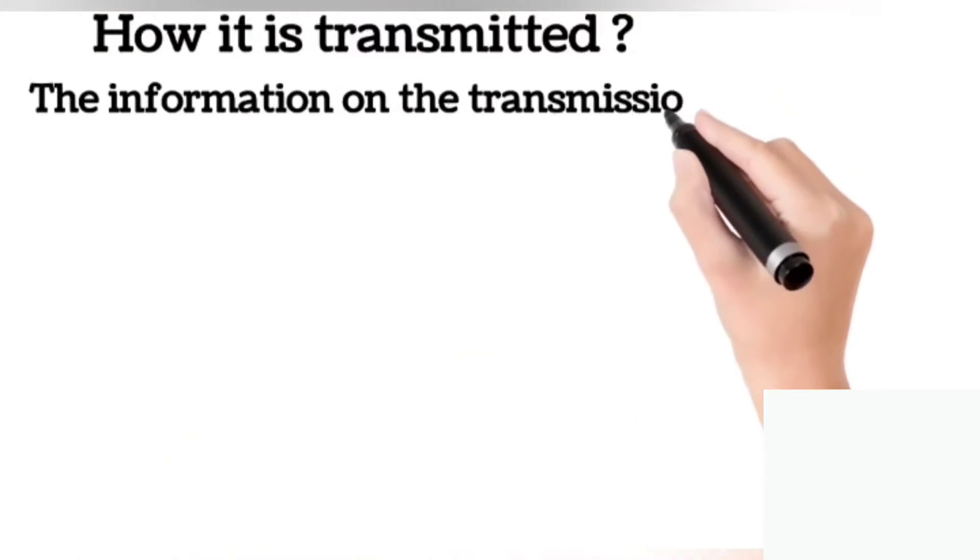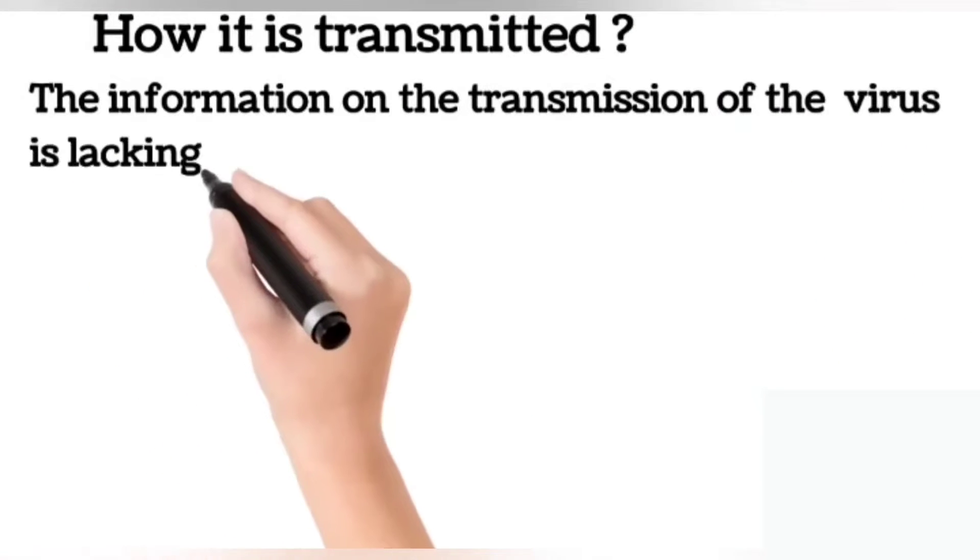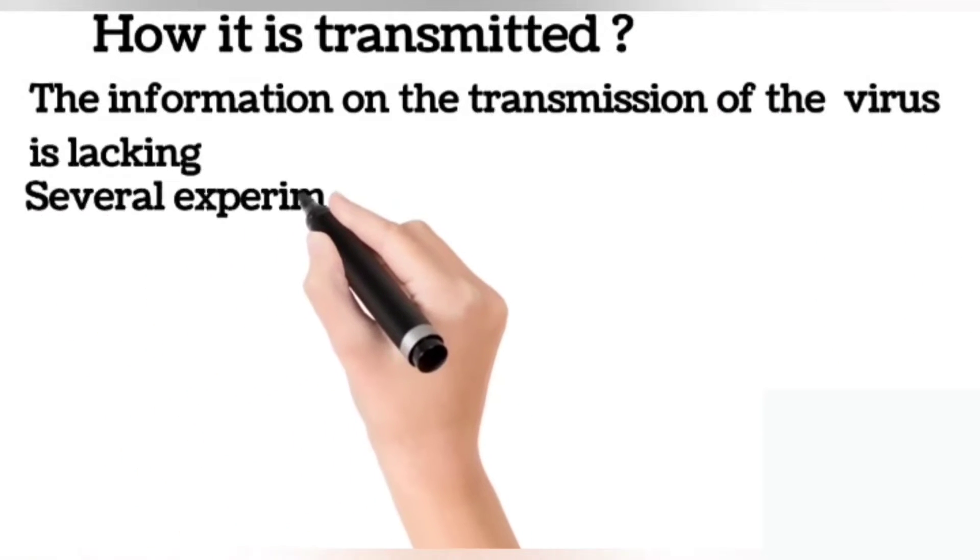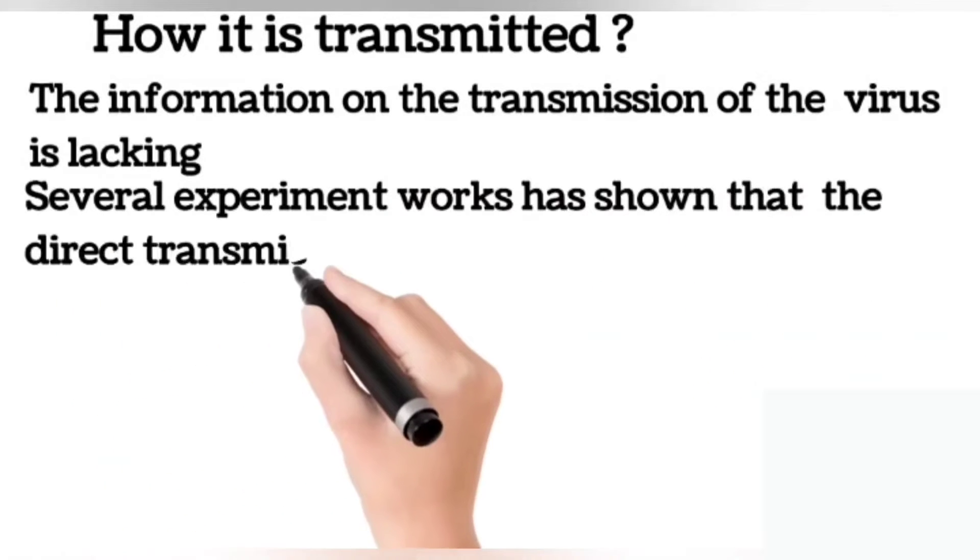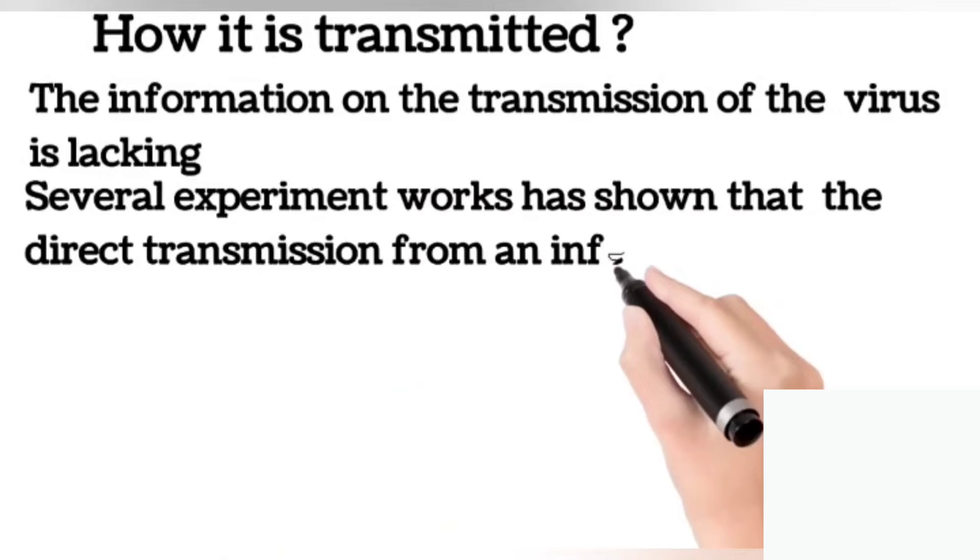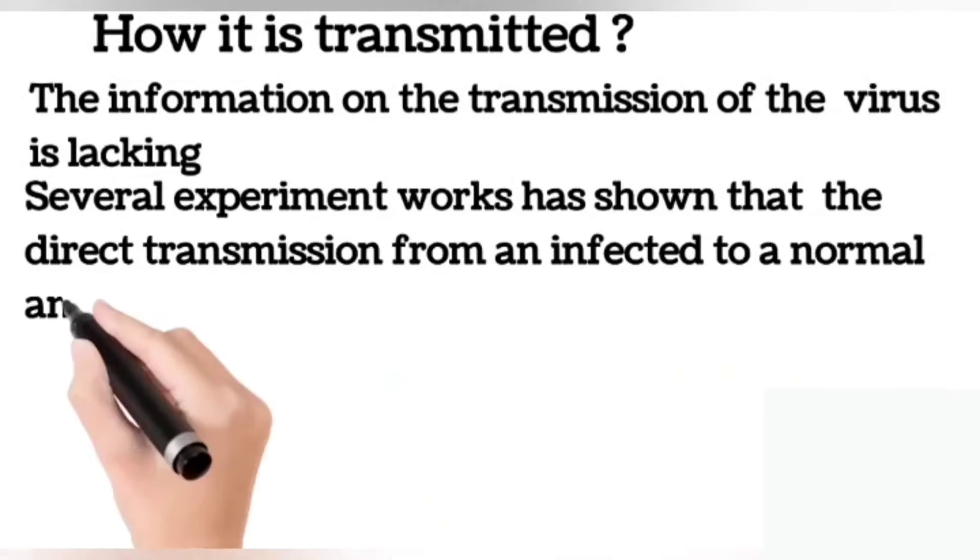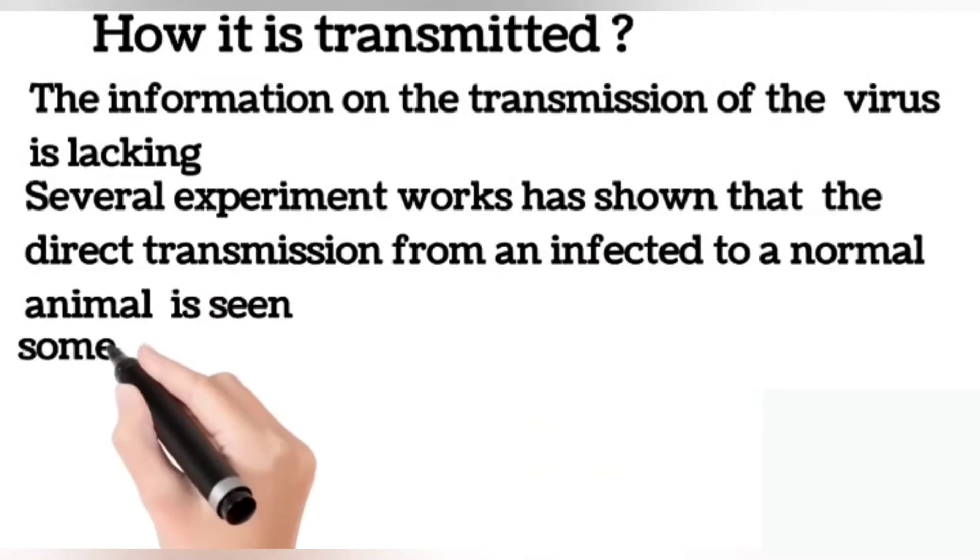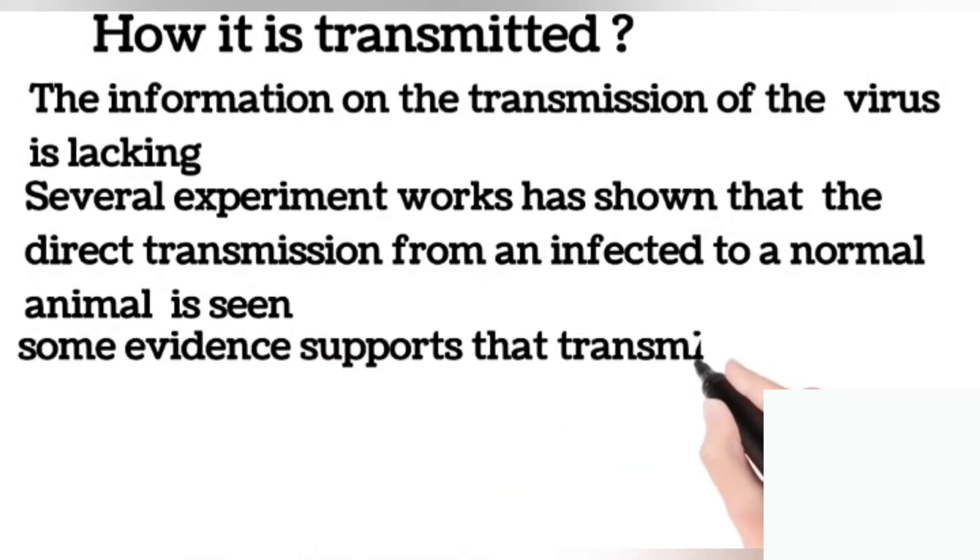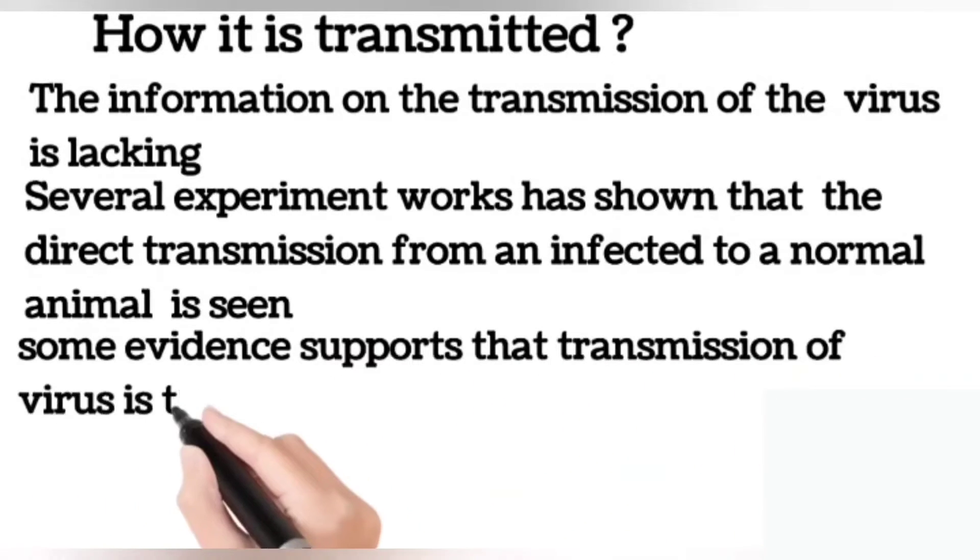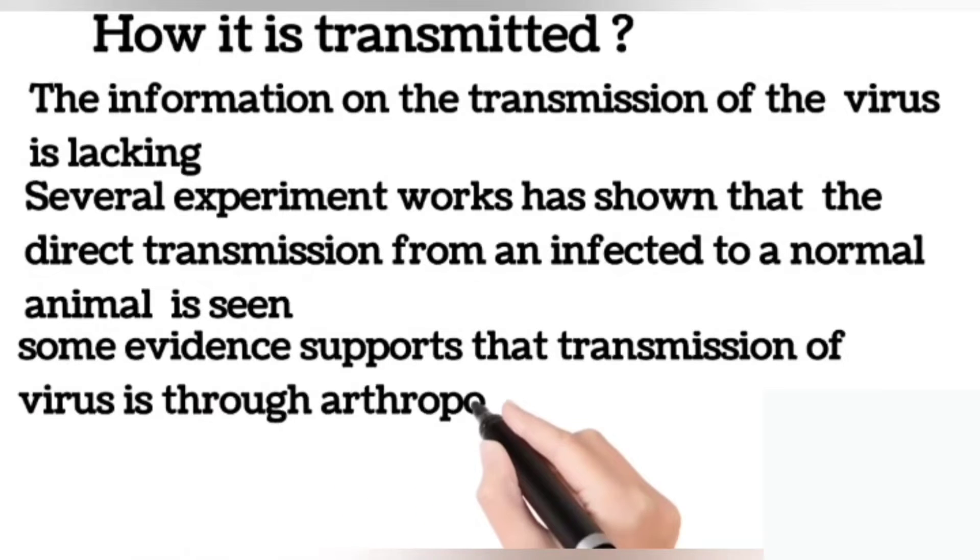How is it transmitted? The information on the transmission of virus is still lacking. Several experimental works have shown that direct transmission from an infected animal to a normal animal is seen. Some evidence supports that transmission of virus is through arthropods like insects or ticks, which are termed virus vectors.